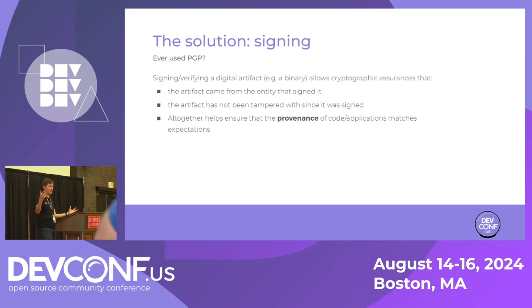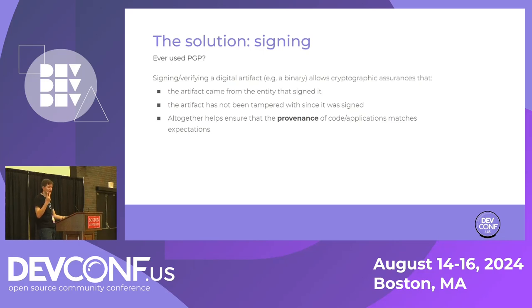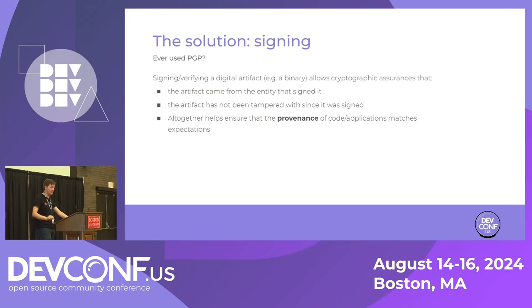The person that performed the signing action — that is who it's coming from. And also crucially, it indicates that the artifact hasn't changed from the time it was signed. Those guarantees are important because they begin to help ensure provenance guarantees, so you can know that software came from a particular source.